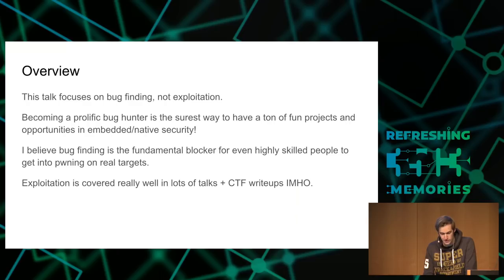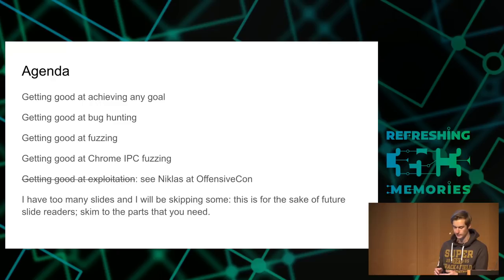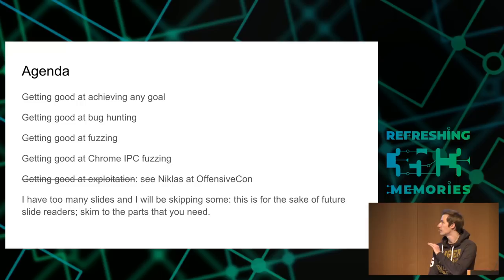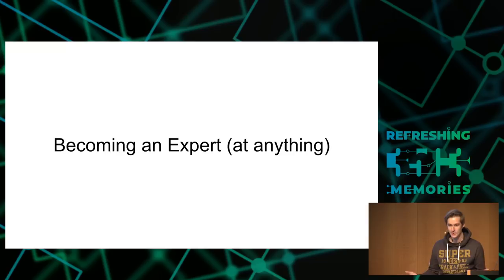The agenda will be: how do you make a process to achieve any goal, then how do you apply some kind of strategy to bug hunting, then this new fuzzing style I've been developing, some other people in the industry I've been working with, and finally how this all ties back to Chrome IPC. The bug I'll be showing was used in a full chain exploit developed with a couple other people — details of the exploitation will be discussed at OffensiveCon, also here in Germany.